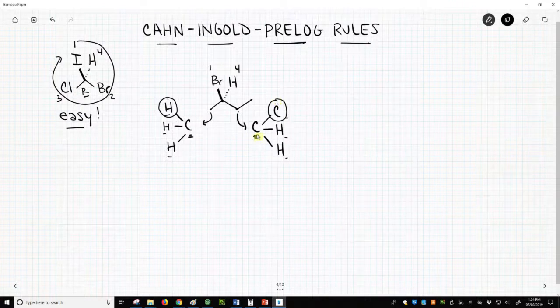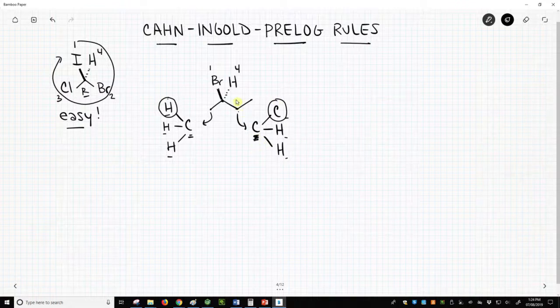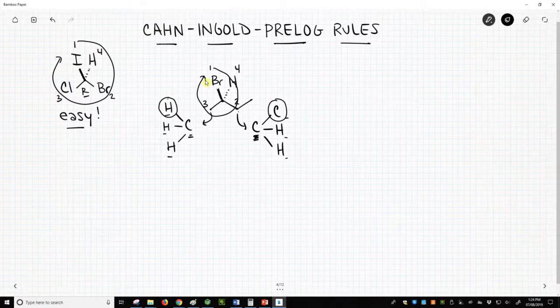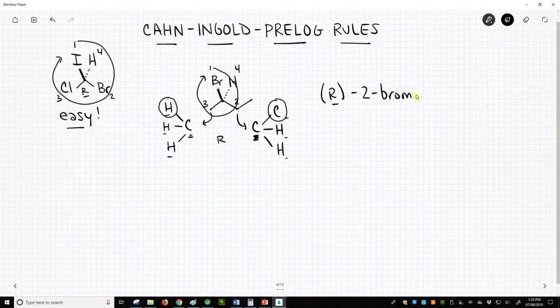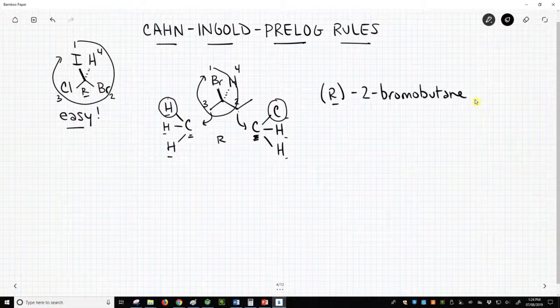And the discussion. This particular carbon is higher priority. That is two. That is three. And so that's how we'll assign this. So one to two to three, we've assigned our priorities. That is a clockwise rotation. This is an R stereocenter, and if we wanted to write this out as a full name, this would now be R-2-bromobutane.